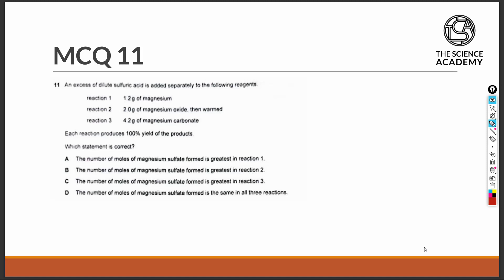Question 11. An excess of dilute sulfuric acid is added separately to the following reagents. Each reaction produces 100% yield of the products. Which statement is correct?